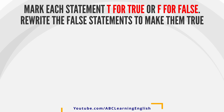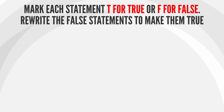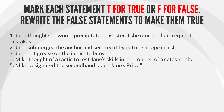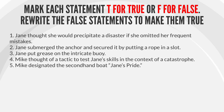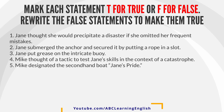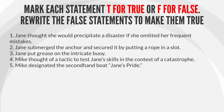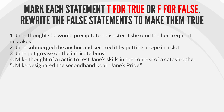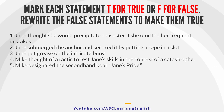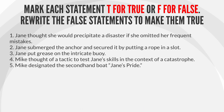Mark each statement T for true or F for false. Rewrite the false statements to make them true. 1. Jane thought she would precipitate a disaster if she omitted her frequent mistakes. 2. Jane submerged the anchor and secured it by putting a rope in a slot. 3. Jane put grease on the intricate buoy. 4. Mike thought of a tactic to test Jane's skills in the context of a catastrophe. 5. Mike designated the secondhand boat Jane's Pride.